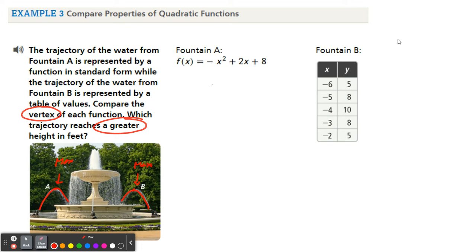So let's use fountain A. Fountain A is in standard form. So we have AX squared plus BX plus C. So A is negative 1. So A is negative 1, B is 2, and C is 8. So to find the vertex, first I need the axis of symmetry. X equals opposite of B over 2A. Your 2 is positive, the opposite of positive 2 is negative 2, and then 2 times negative 1. Simplify the bottom, that's negative 2 over negative 2, which is positive 1. So our X value is going to be 1.